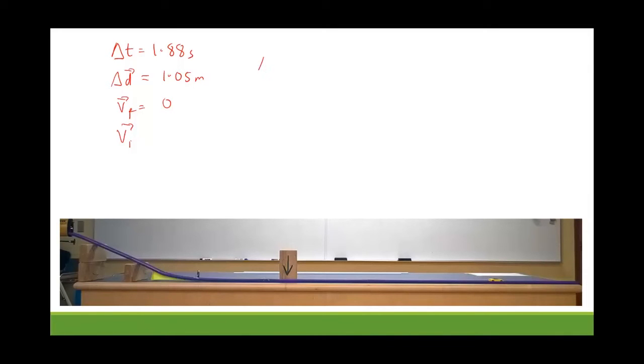The kinematics equation that relates those is this one. So if I rearrange that to give me the initial velocity, it's going to be two times the displacement divided by the time interval minus the final velocity. Plug in my values. That's two times 1.05 meters divided by 1.88 seconds minus zero.